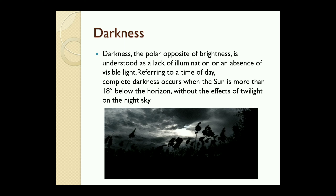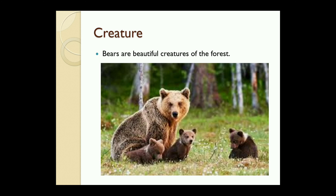Darkness: darkness, the polar opposite of brightness, is understood as a lack of illumination or an absence of visible light, referring to a time of day. Complete darkness occurs when the sun is more than 18 degrees below the horizon, without the effects of twilight on the night sky.